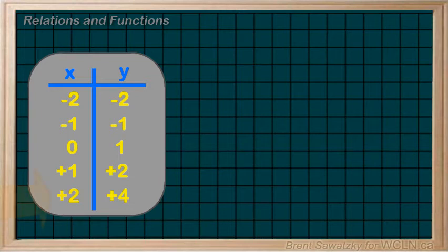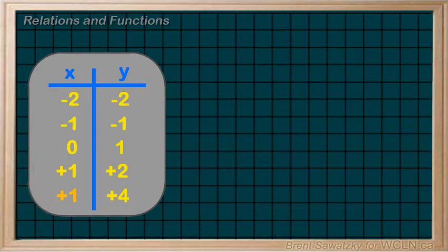Now, if we changed this last set of data, we can see that we have a duplicate on the left. We can see that when x is 1, we have two y-values: plus 2 and plus 4. Thus, this relation is no longer a function.